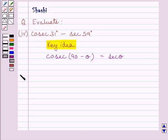Let us now start the solution. We have to find cosec 31° minus sec 59°. Now we know 31 degrees and 59 degrees are complementary angles.